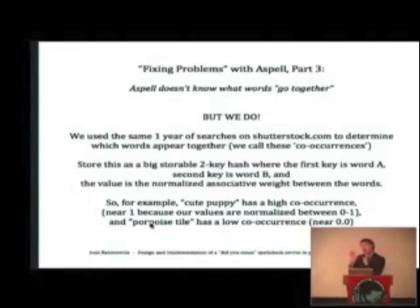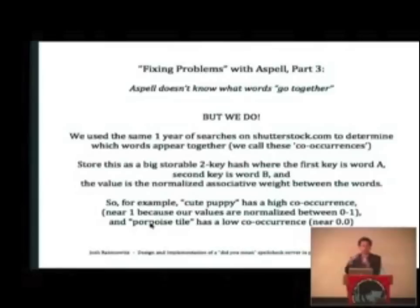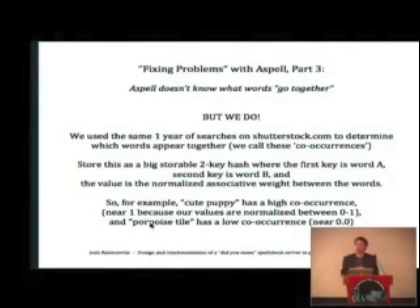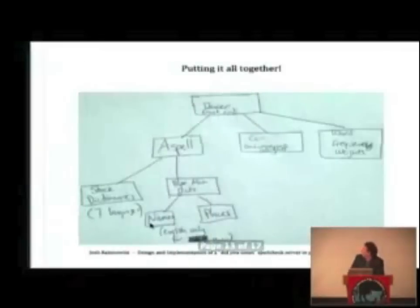For what words go together, we took the same one year of searches from Shutterstock and counted co-occurrences — what words appear together. We stored this as a large storable two-key hash where the first key is the first word, the second key is the second word, and the value is how often they occur together. We also normalize this between zero and one. For example, 'cute puppy' is a very high co-occurrence — it's a fairly common search — whereas 'porpoise tile' is very low, probably actually zero.